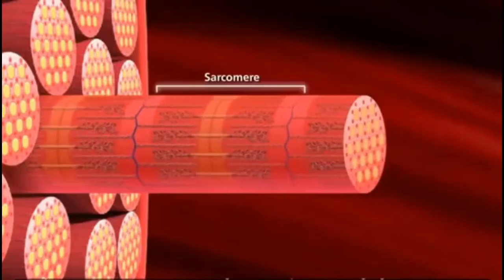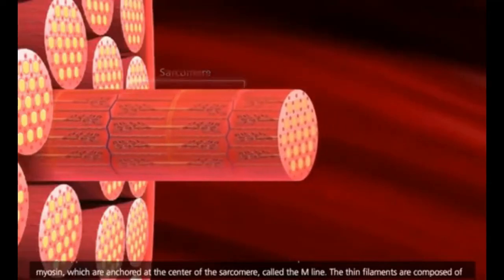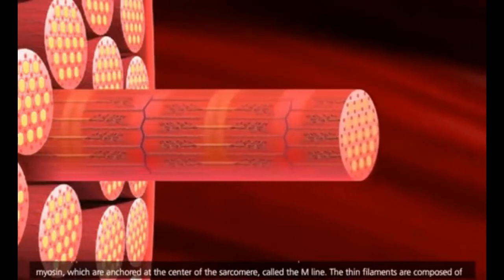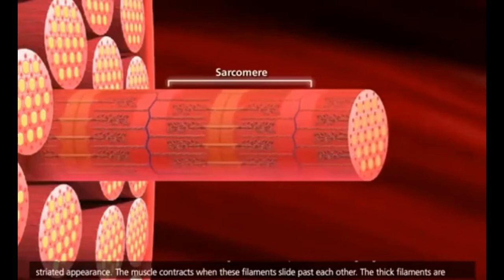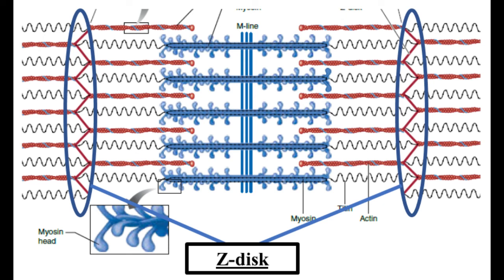Now let's talk about the contractile proteins. Myofibrils — each muscle has thousands of myofibrils. Each myofibril has basic units called sarcomere. When a myofibril is kept under an electron microscope, you'll see sarcomeres lined up one after the other. But what is a sarcomere made of? Let's look at the sarcomere from outside in. The border of a sarcomere joins two sarcomeres and appears to be a zigzag line. We will call this a Z-disc or Z-line.